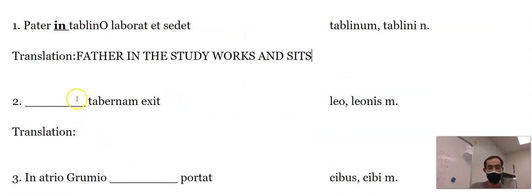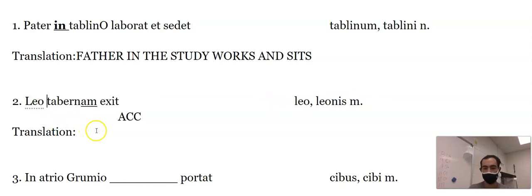Okay, now we got something tabernam. This is a little tricky one. A-M is accusative. That's a direct object. So something exit a shop. That lion has got to be nominative here. So 'leo,' I just take the first part. I'm not going to bother with anything else. Leo, tabernam, exit. Lion exits the shop.